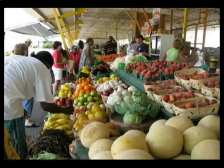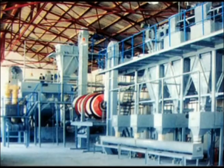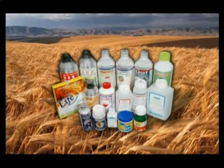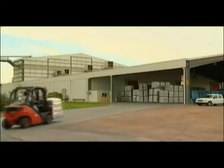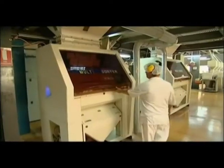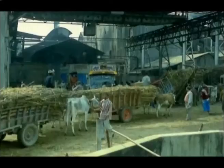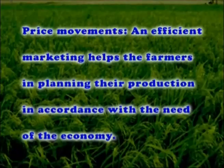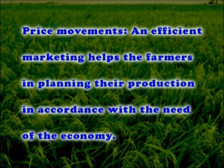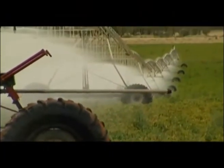Growth of agro-based industries: The agriculture marketing system helps in the growth of agro-based industries and stimulates the overall development process of the economy. Many industries depend on agriculture for the supply of raw materials — for example, the sugar industry, cotton industry, and silk industry. Price signals: An efficient marketing system helps farmers in planning their production in accordance with the needs of the economy through price signals. The marketing system also helps farmers in the adoption of new scientific and technical knowledge.